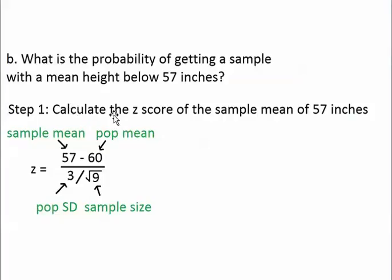To calculate the z-score of the sample, we follow this formula. We subtract the sample mean, which is 57 in this case, by the population mean of 60. In the question, I told you that the mean of the population is 60 inches. And we divide by the population standard deviation over the square root of the sample size.